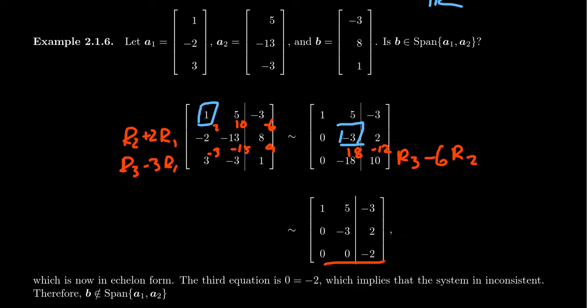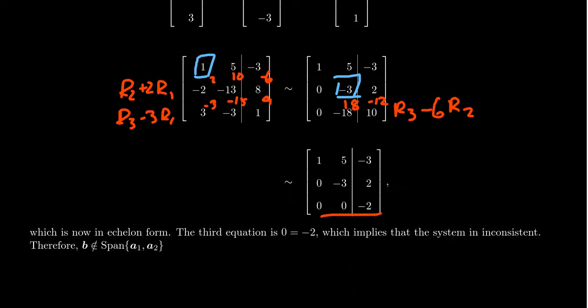Now, in this example, you will see that the last row gives us a contradiction. And since we get a contradiction, this is saying basically 0 equals negative 2. We're not working mod 2. We're working over the real numbers. This is a contradiction. So we have inconsistency here.